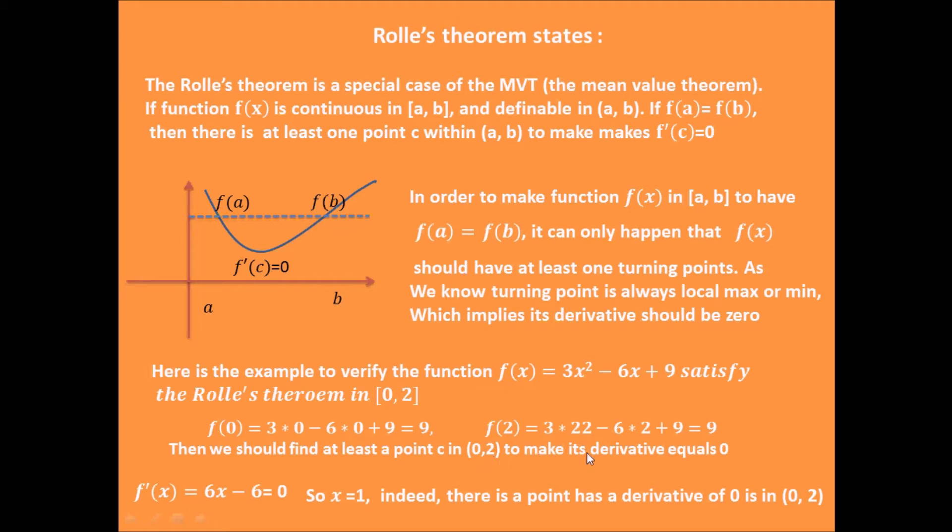That means we should be able to find at least one point c within [0, 2] to get the derivative equals 0. So we just get the derivative of function f to make it 0. We can get a point x = 1. Indeed, x = 1 is within the range [0, 2]. That means this function satisfies Rolle's theorem.